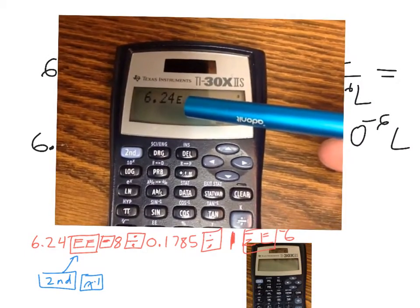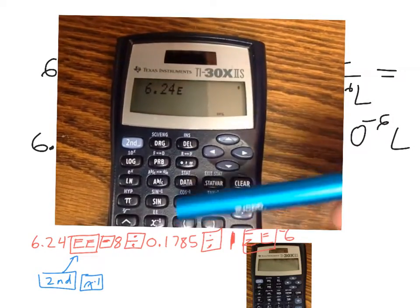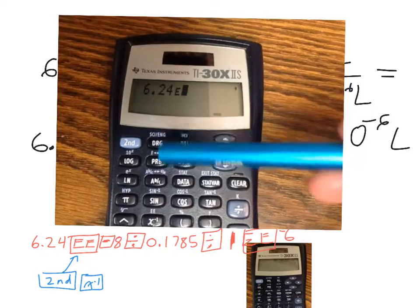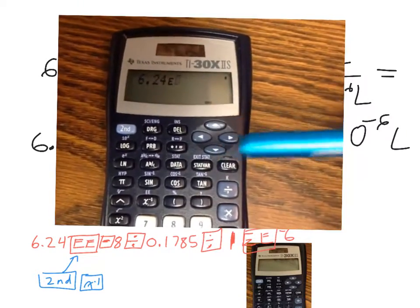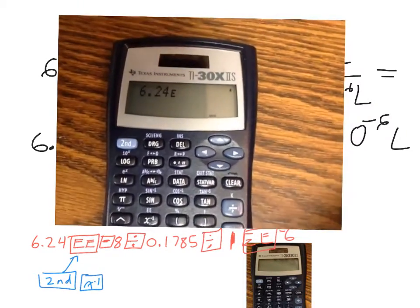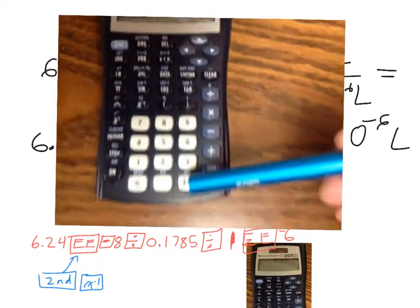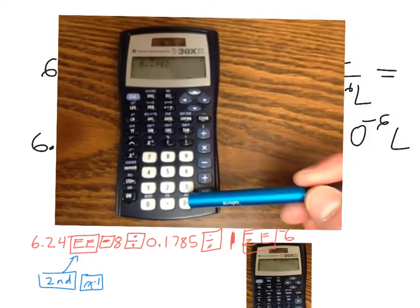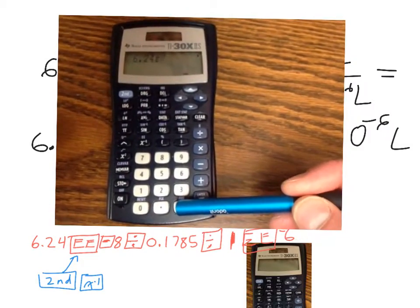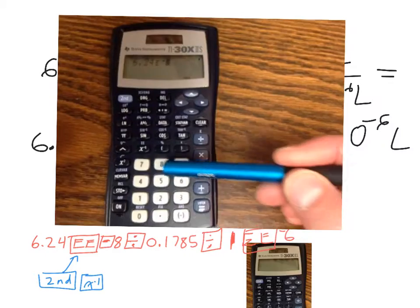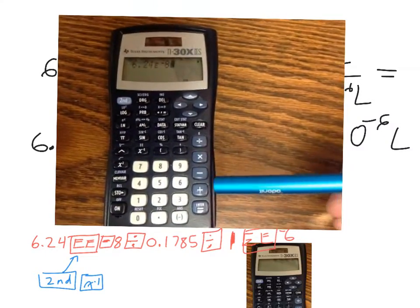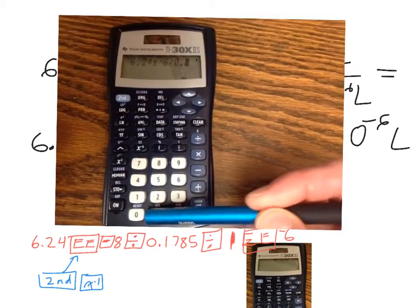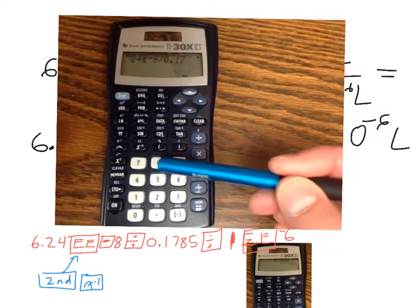And when I do that, an E appears right there. See, I hit that EE button after I hit 2nd, X to the negative 1, and that E appears. Now I want to enter my negative 8. To do that, I'm going to use the negative key. So I hit the negative key and 8. Now it's just what I'd expect. Divide by 0.1785.